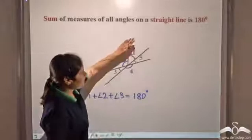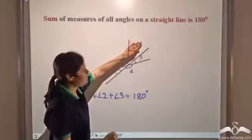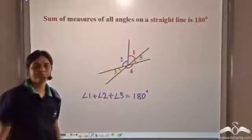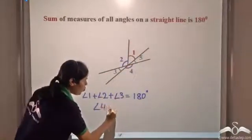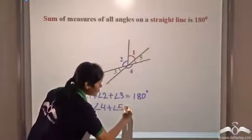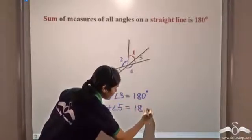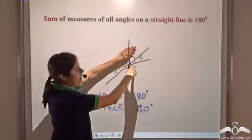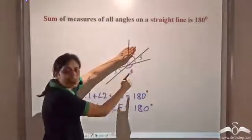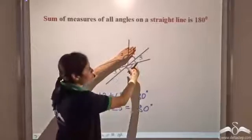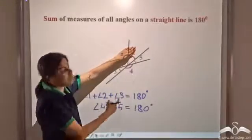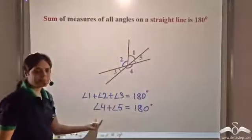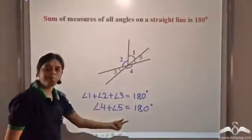Now, let's look at the other side of this line. On the other side, we have angle four and angle five. These two will also add up to 180 degrees. Note that angle four and angle five form a linear pair because these two angles are adjacent and lie on a straight line. So, they form a linear pair. Hence, their sum will be 180 degrees.